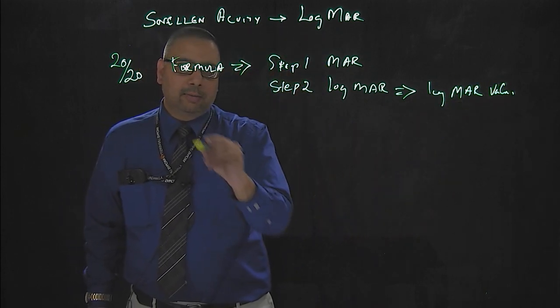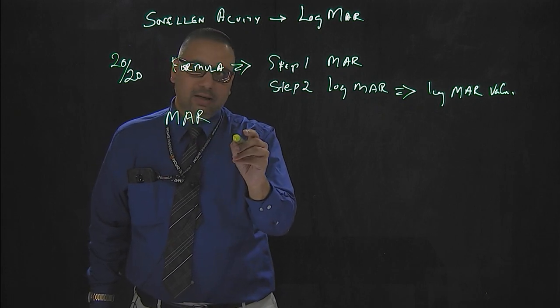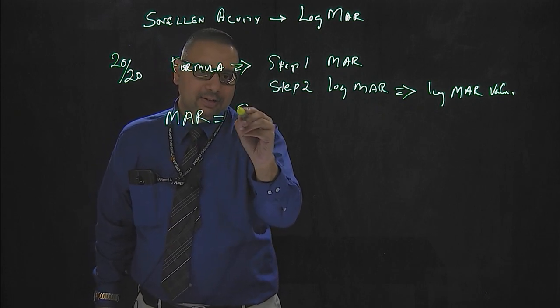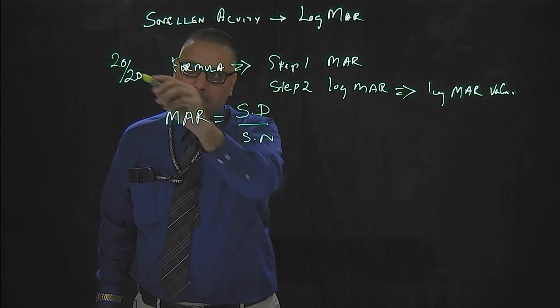We will try this now. The formula for MAR - MAR is called the minimum angle of resolution. It is Snellen's denominator divided by Snellen's numerator. Here both are 20.